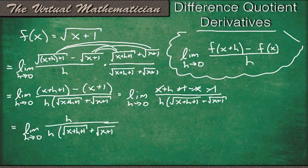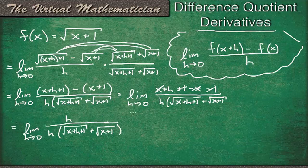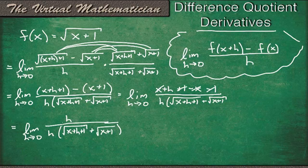Okay, perfect. Now, notice that we have an h in the numerator and an h in the denominator that's being multiplied by all this stuff. So these guys are going to cancel.